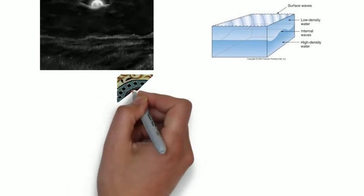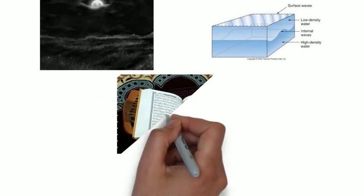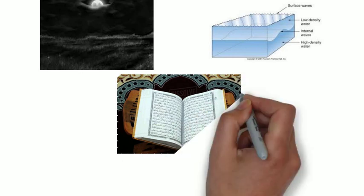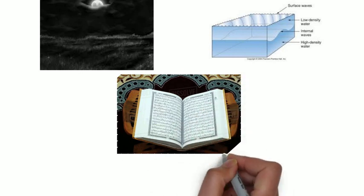A Quran verse, revealed more than 1,400 years ago, describes the phenomenon of darkness in the deep sea perfectly.